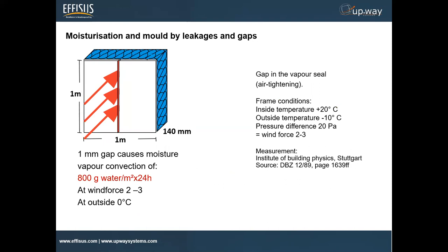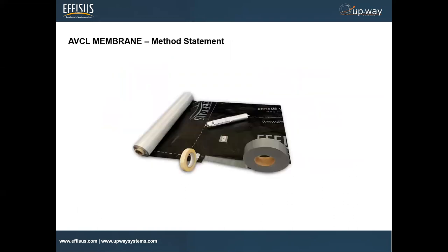The same applies for moisturization and mold from leakages and gaps. The same experiment by the Institute of Building Physics in Stuttgart showed that with just a one millimeter gap, they got 800 grams of water per square meter in just 24 hours. Imagine having a gap for 5, 10, or 20 years — the amount of water migrating from the inside to the outside, condensating inside your wall, leading to mold growth and corrosion — big problems you need to avoid when designing a facade.